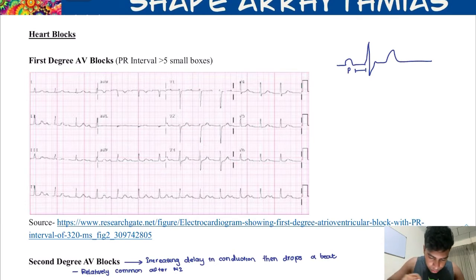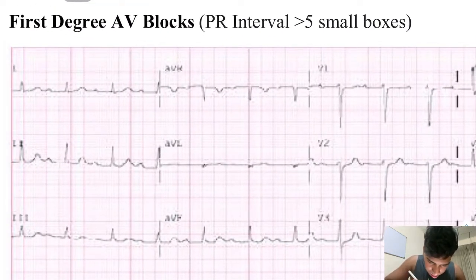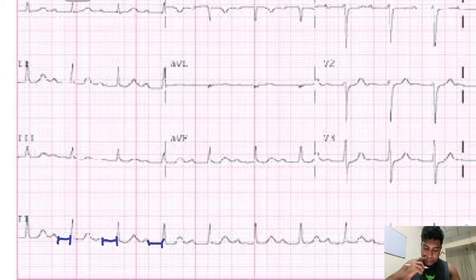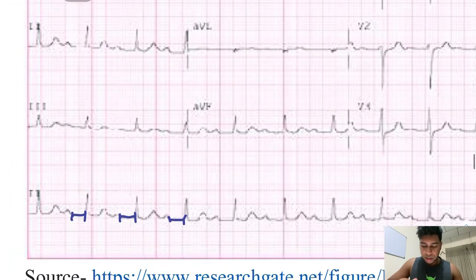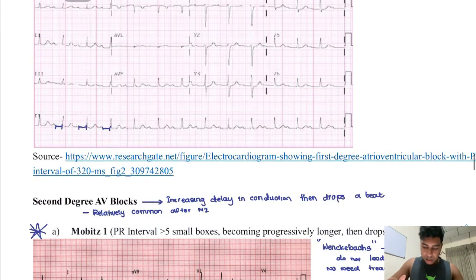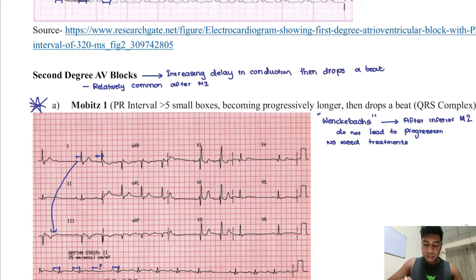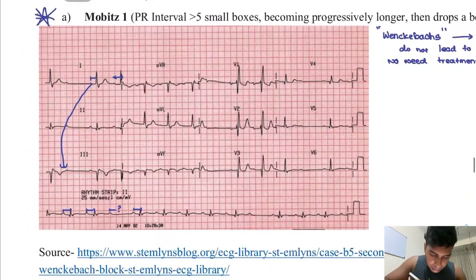In first degree AV block, the PR interval is greater than five small boxes — that's greater than half a large box. In second degree AV block, the PR interval is also greater than five boxes, but it progressively becomes longer over time.